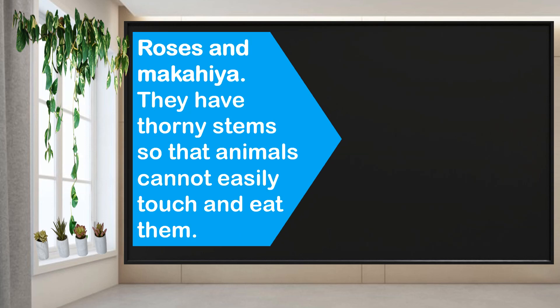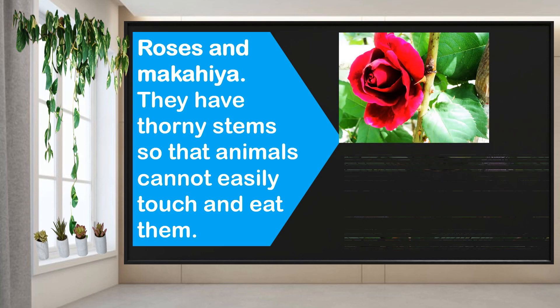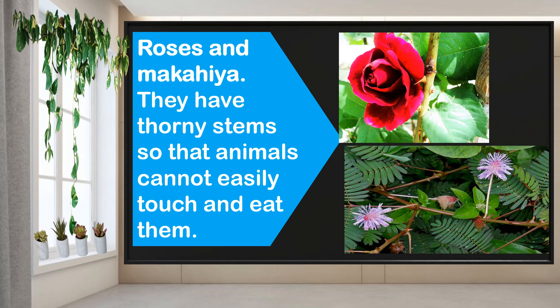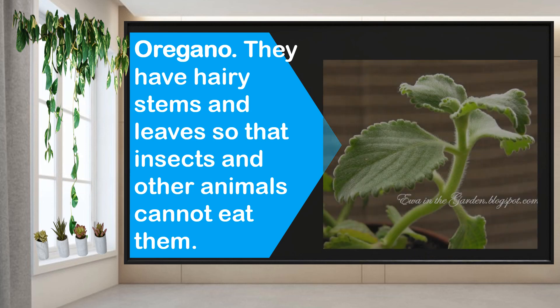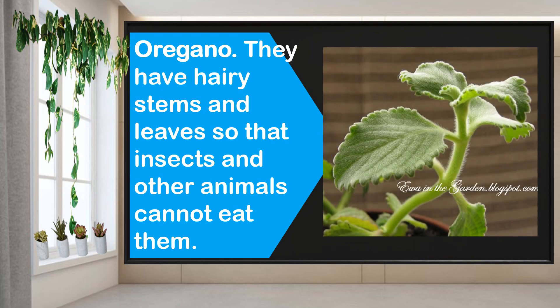Roses and makahiya have thorny stems, so that animals cannot easily touch or eat them. Some plants have hairy stems and leaves so that insects and other animals cannot eat them.